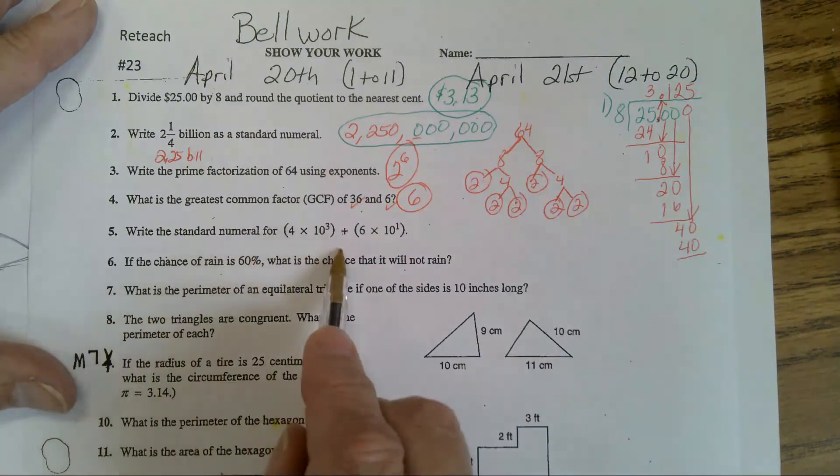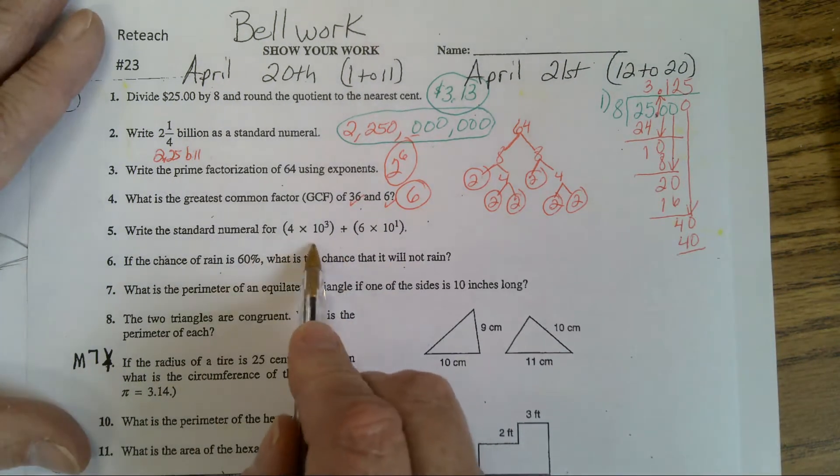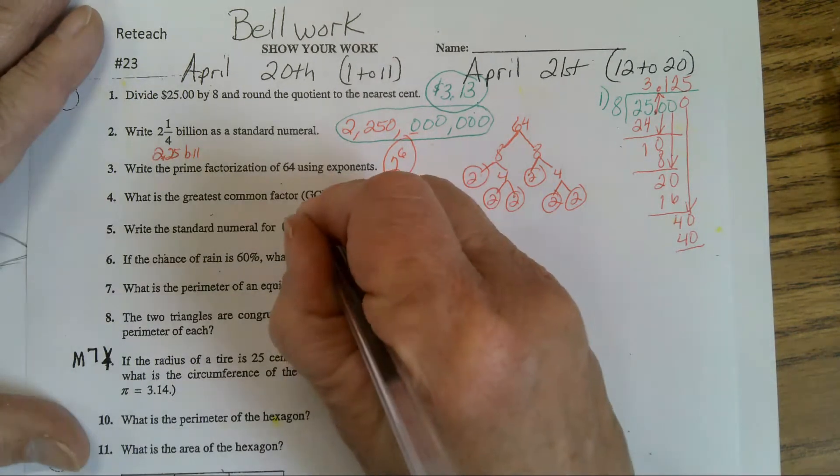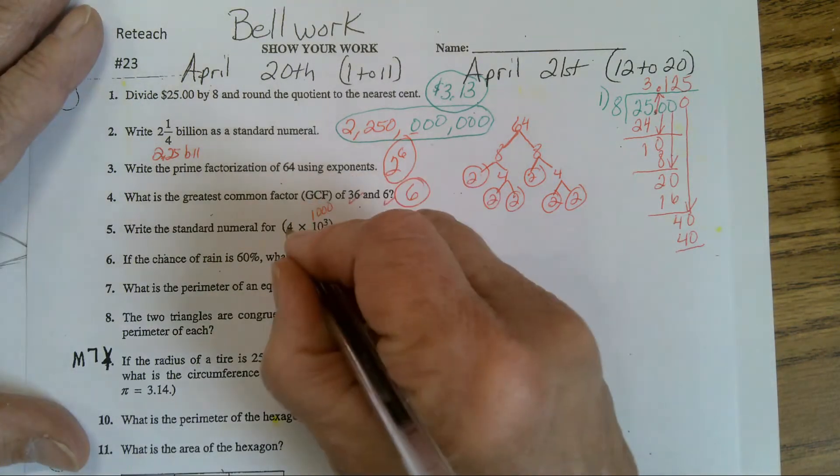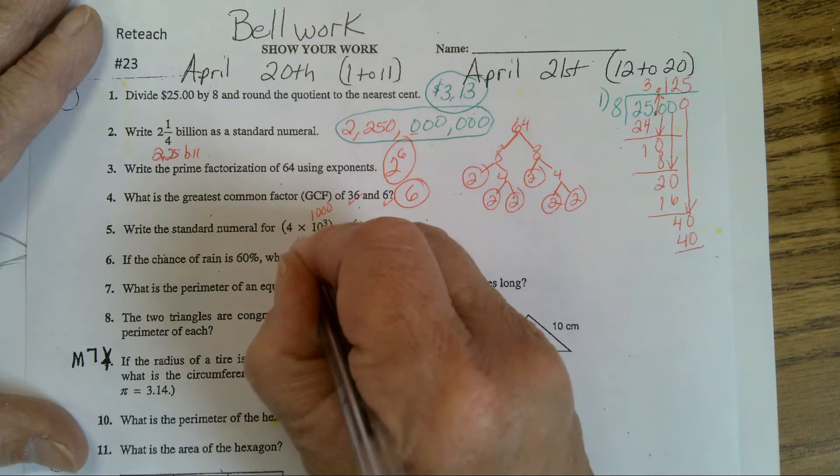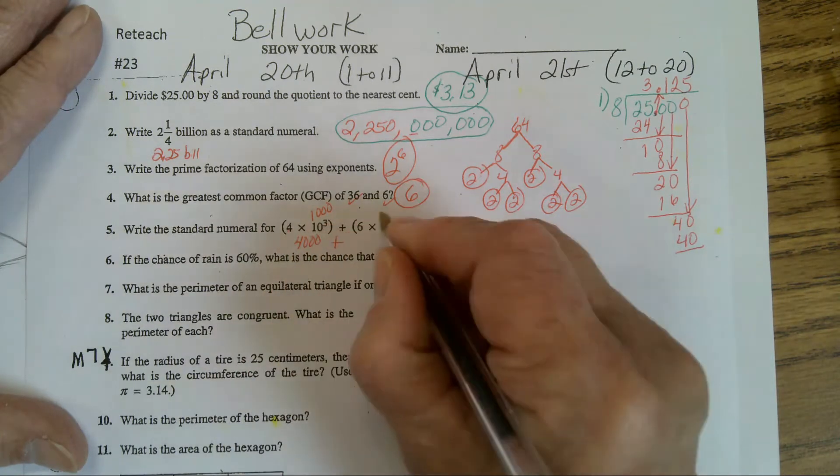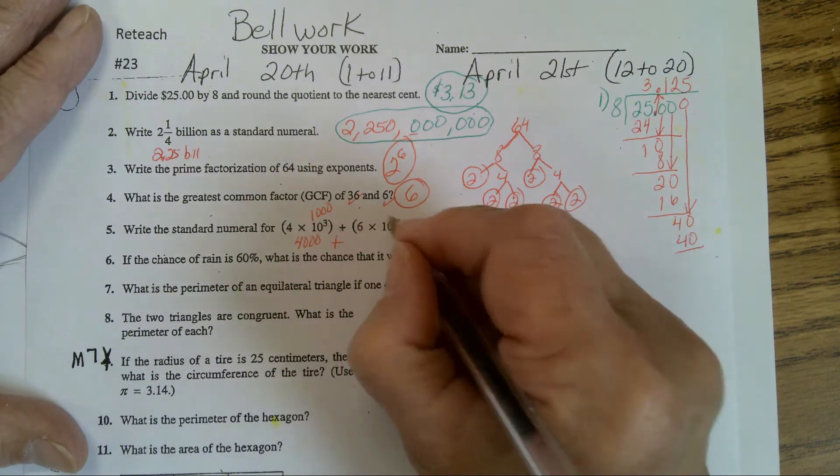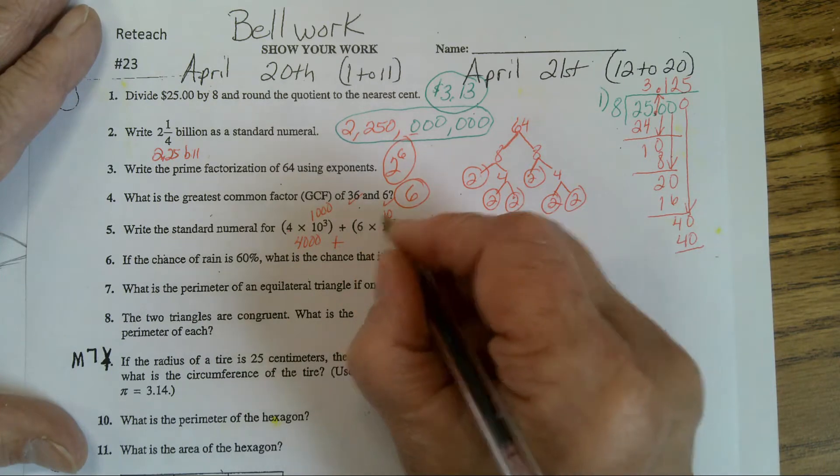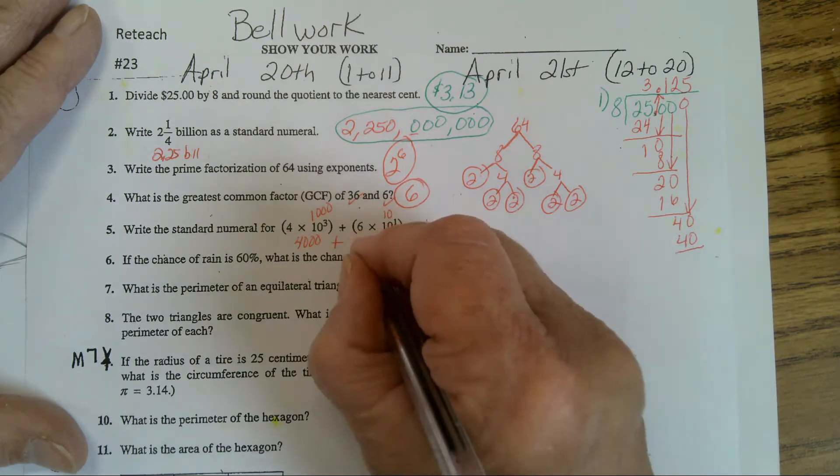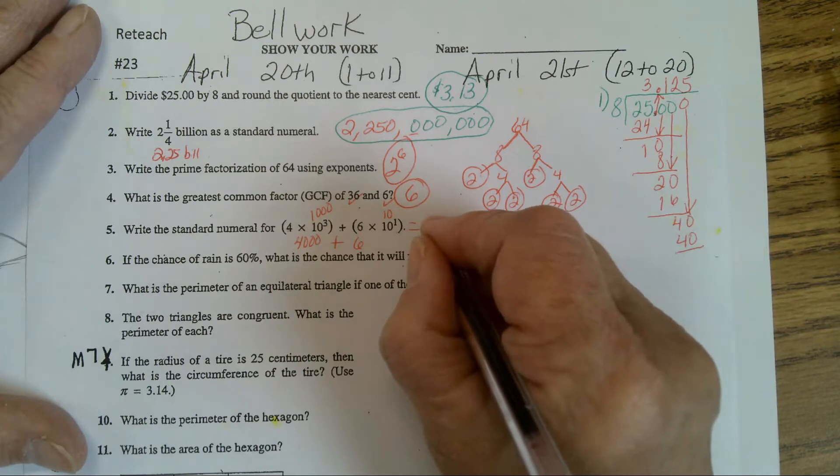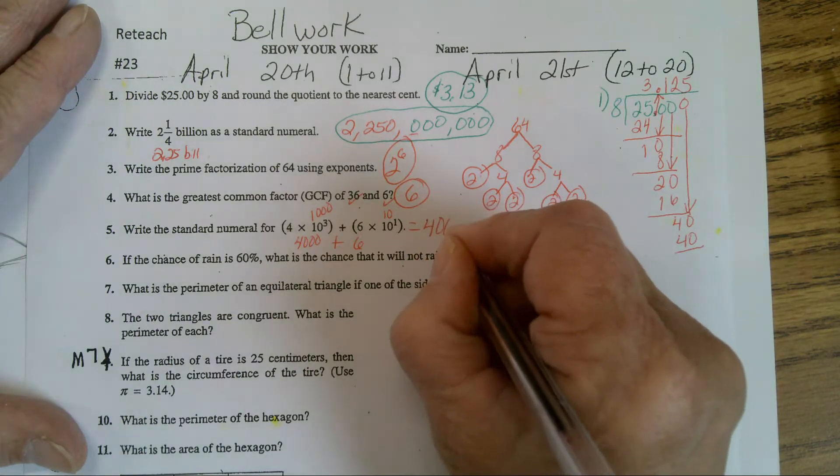Standard numeral. 10 to the 3rd power is 1,000. 4 times 1,000 is 4,000 plus 6 times 10 to the 1st is just a 10. 6 times 10 is 60. So the answer is 4,060.